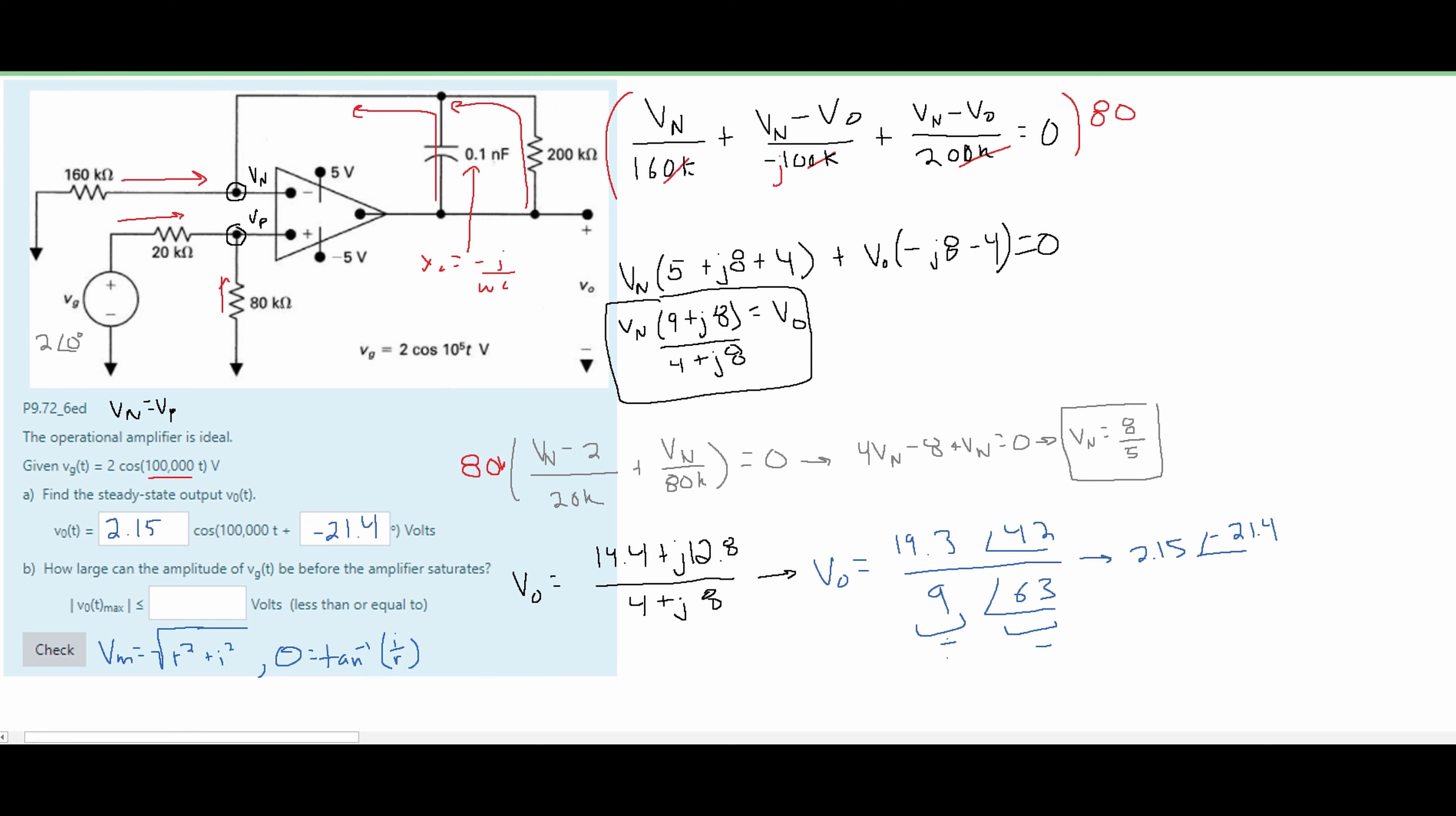Now we are going to solve for part B. For part B we are going to find our V0 max. And to do so we are going to use the V0T and our VGT. We are going to set them equal to each other because we know what our V0 max is. It's going to be this 5 volt and this negative 5 volt. We just need to find out at what voltage this happens. So what we're basically going to do is make an equation.